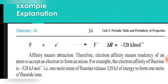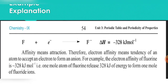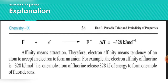Affinity means attraction, so electron affinity means the tendency of an atom to accept an electron to form an anion. The electronegative elements, which are the non-metals, have more tendency to accept electrons and form anions — to convert into negative ions — because they are electronegative and become stable by gaining electrons, releasing more energy.